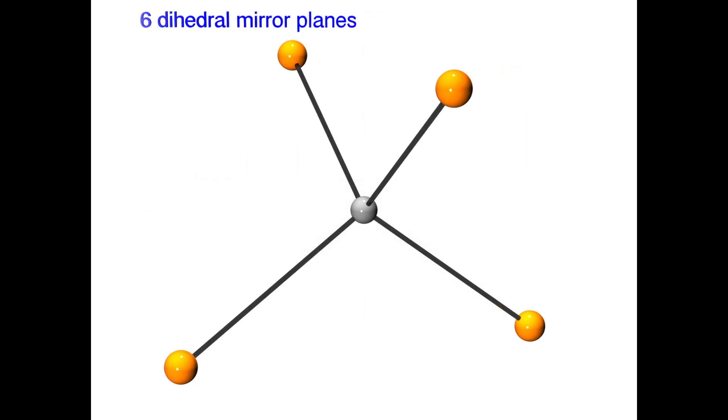There is one last set of symmetry elements for us to find. These are the six dihedral mirror planes. All the mirror planes in the tetrahedral point group are called dihedral.